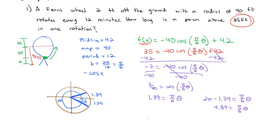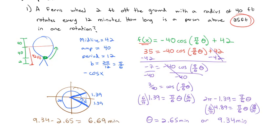We want to know what that θ actually is. So we're going to multiply by the reciprocal of 6/π on both sides of both equations. And when we do, we find our two answers for theta. Theta could be 2.65 minutes. Or with the 4.89, it comes out to about 9.34 minutes. So to answer the question, how long you're above that 35 feet, we just subtract 9.34 minus 2.65, and we end up with 6.69 minutes.